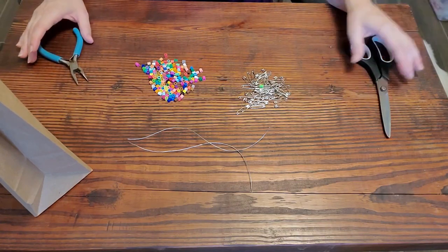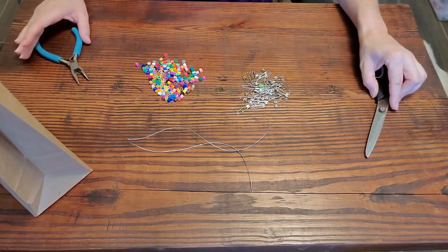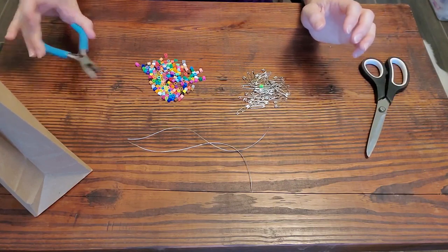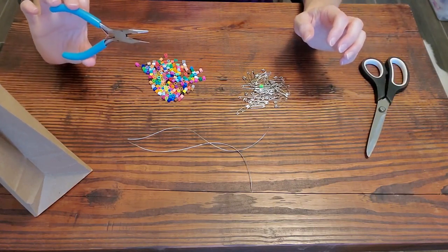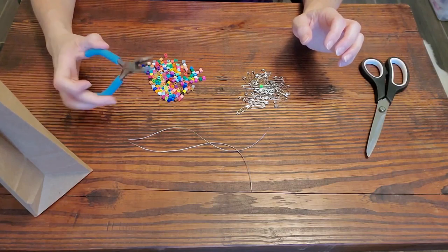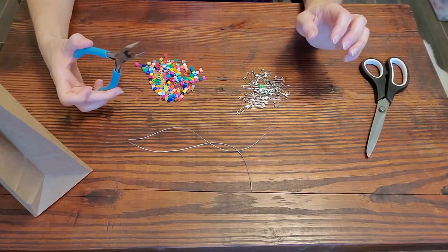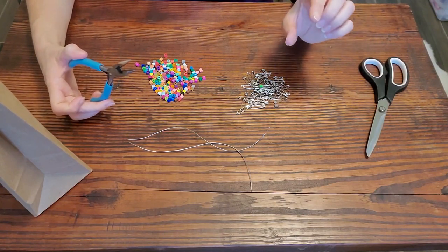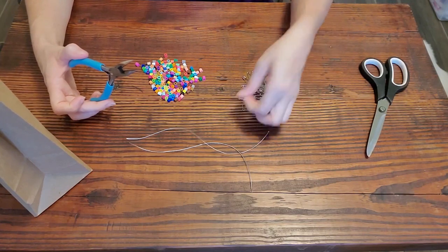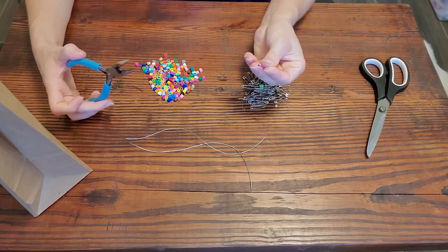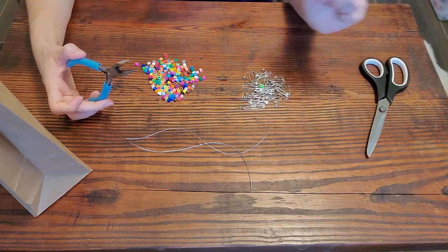The other supplies you're going to need is maybe a pair of scissors to cut your string, and then you're going to need some needle nose pliers. I happen to have the jewelry kind here, but you can use regular needle nose pliers or anything that's going to be strong that will allow you to pinch the tip of the safety pin to make sure it stays closed. We'll get to that later.